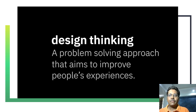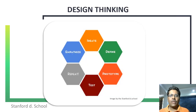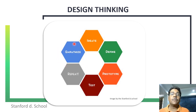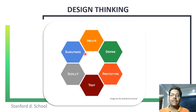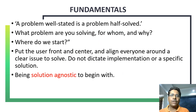This is the well-known design thinking paradigm developed by the Stanford design school. There are quite a few variations, but this is the most common one. It consists of: empathizing, then defining, then ideating, then creating a prototype, then testing, and then repeating. So it's an iterative process. In the next few slides I will explain the meaning of all these things. The process begins with empathy.